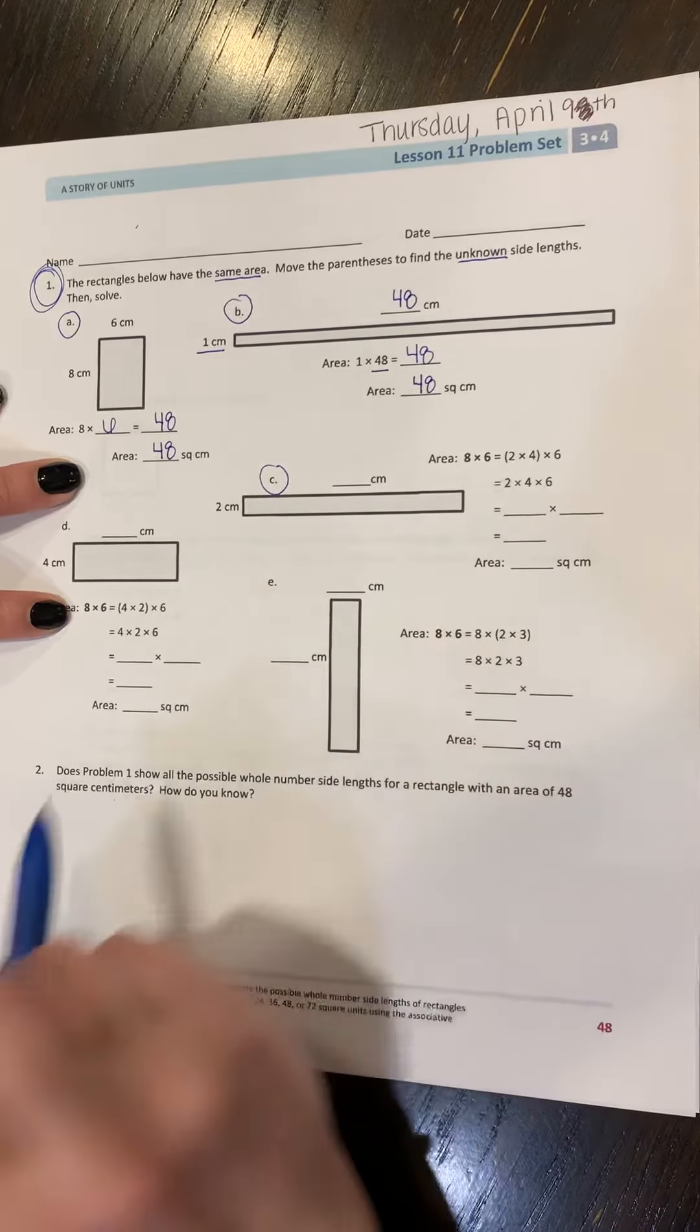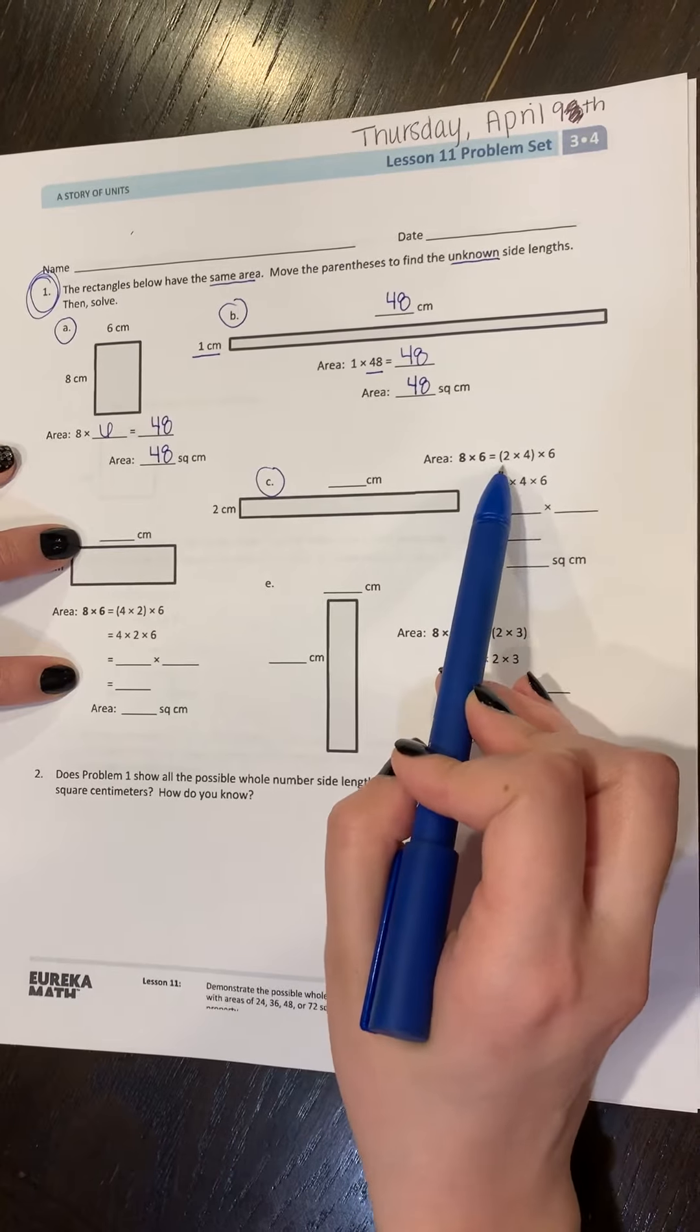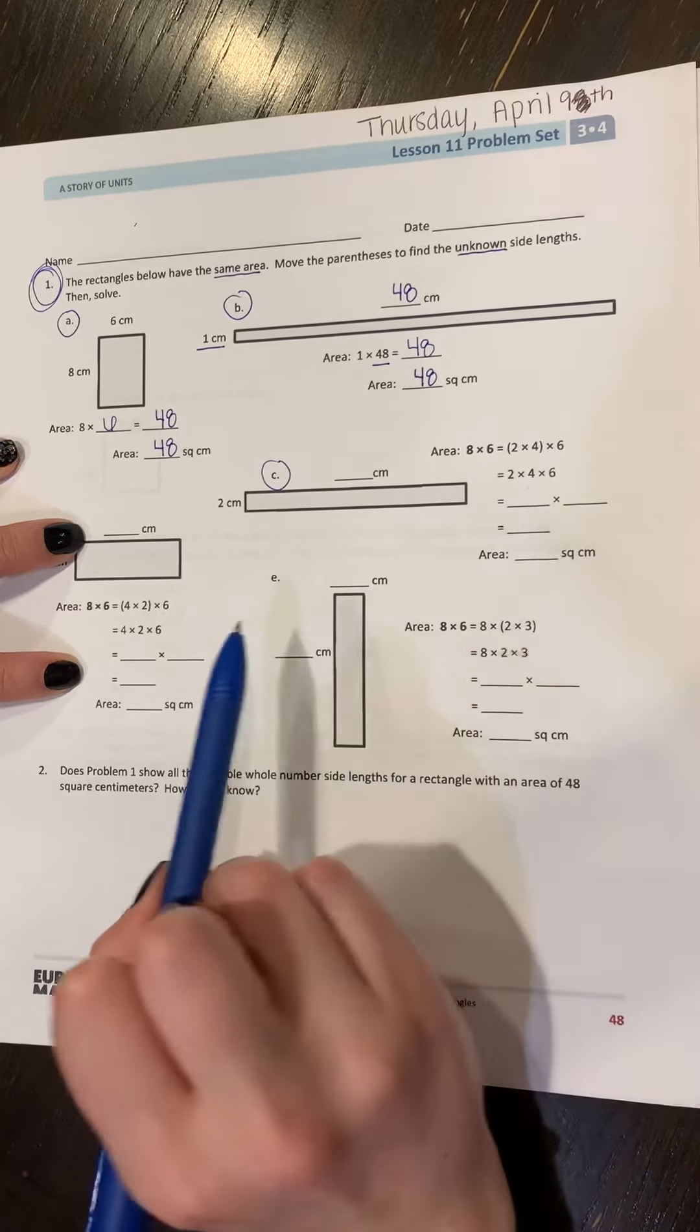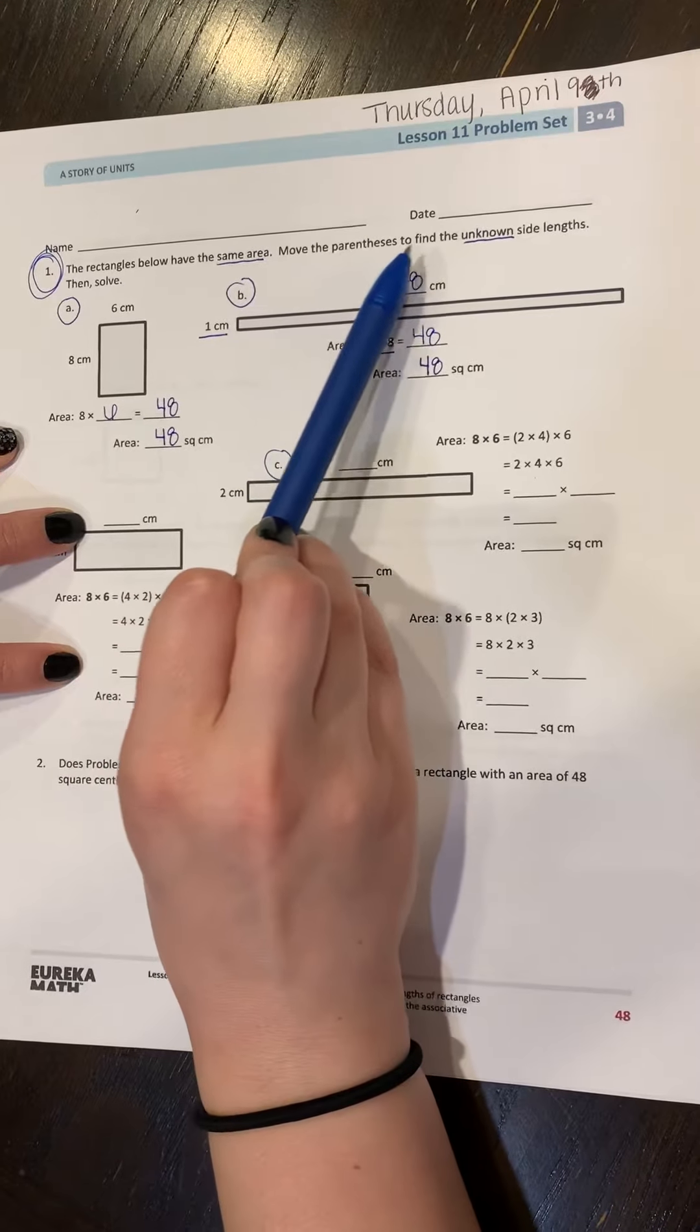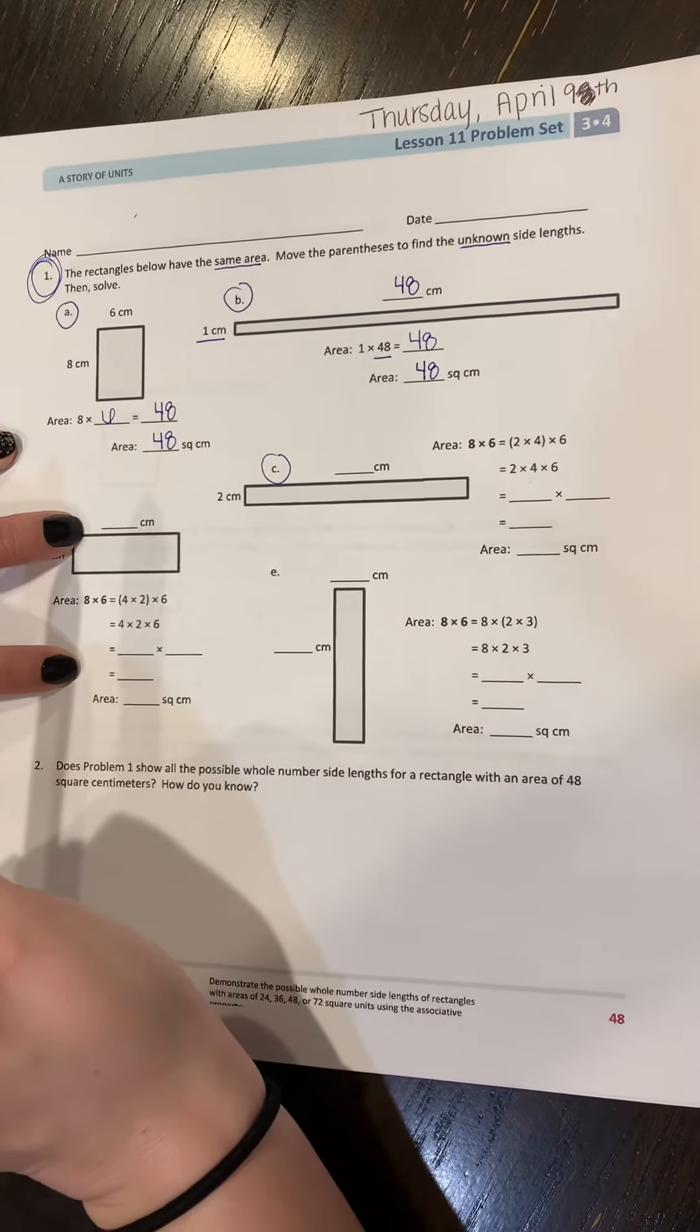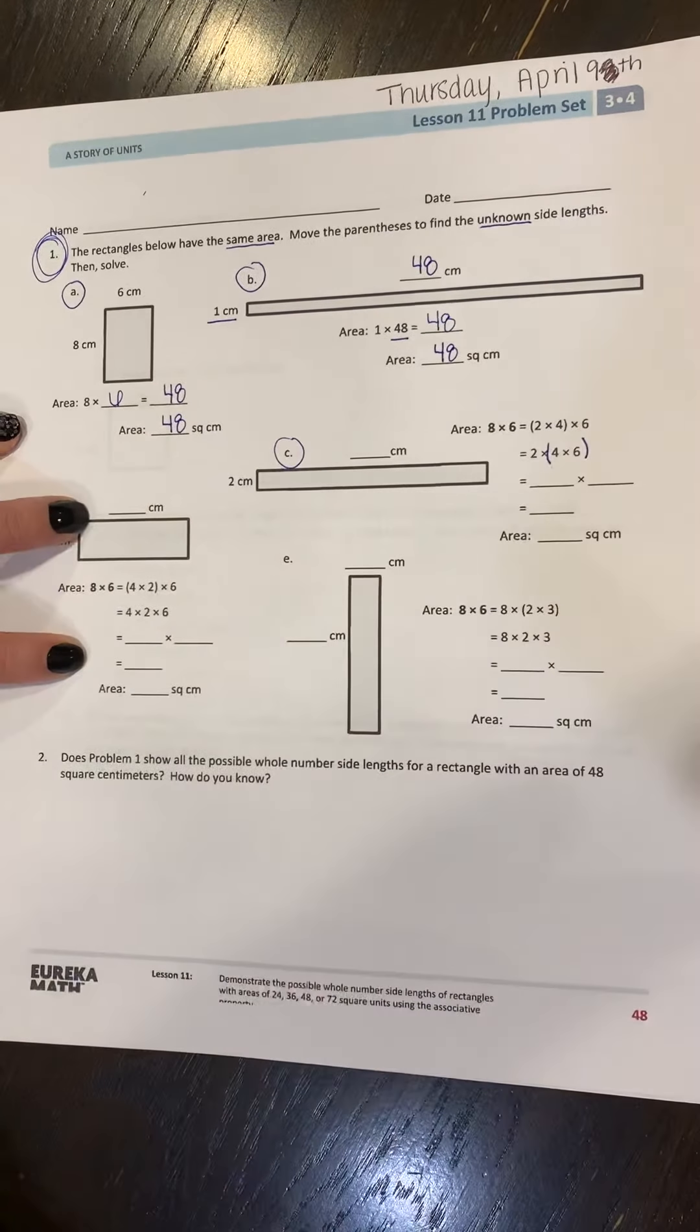Now C is where things start to get a little bit more complicated. So now I've got this area written here, eight times six, right? But they've broken it into two times four times six. Now let's think back to what they told us in our directions. Move the parentheses to find the unknown side lengths. All I'm going to do is move the parentheses from these two numbers to these two numbers, and then I'm going to solve.